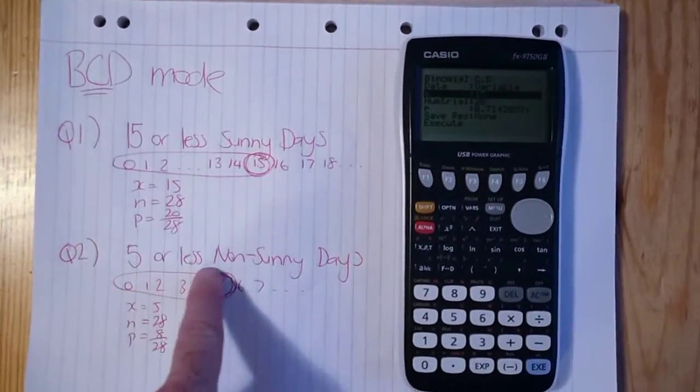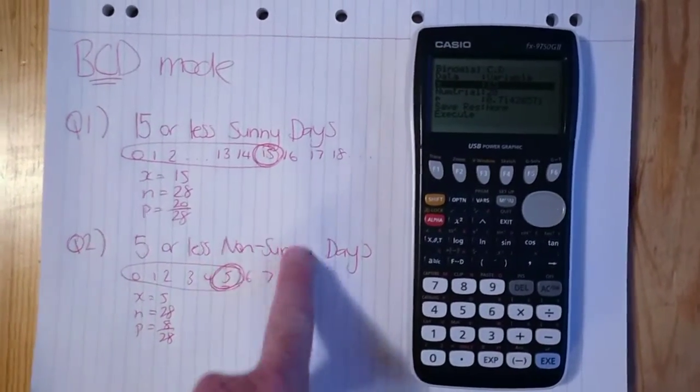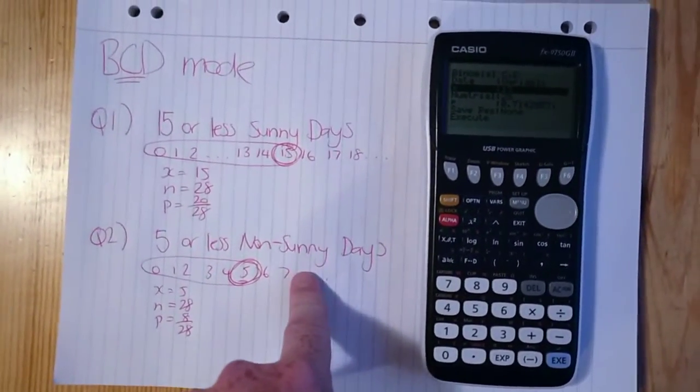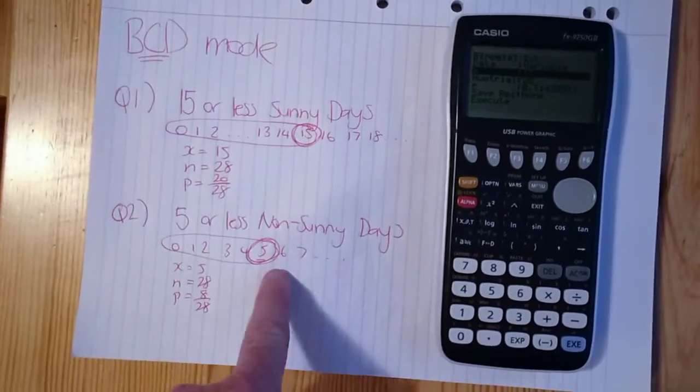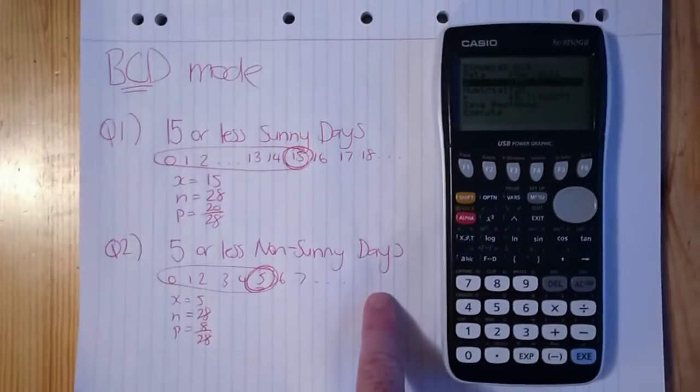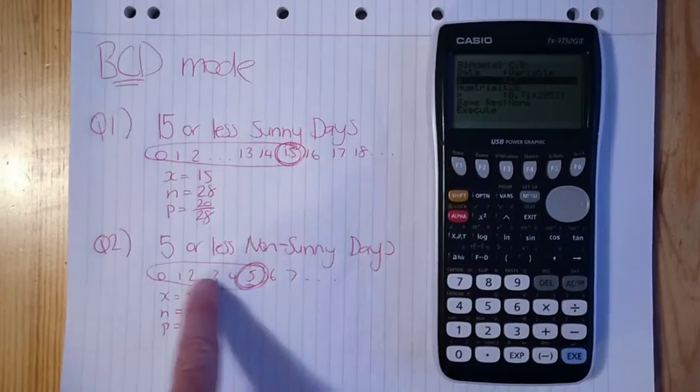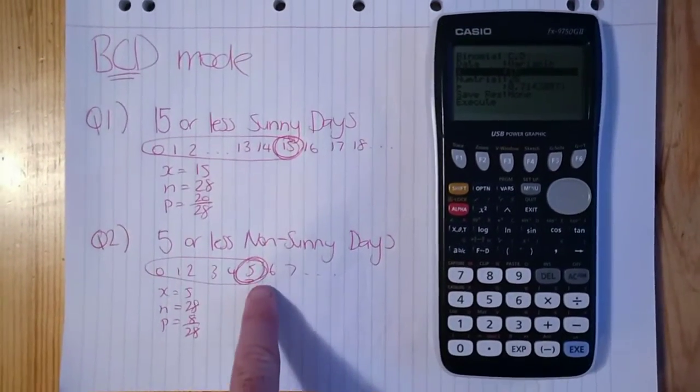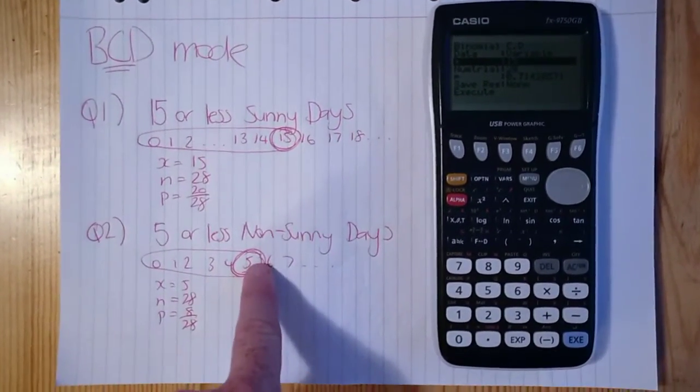Well, what's the probability of five or less non-sunny days? So we've changed it to non-sunny as our success now. And I've written our number line out to seven and it goes dot dot dot to carry on. I've circled five or less, because it does include the five.